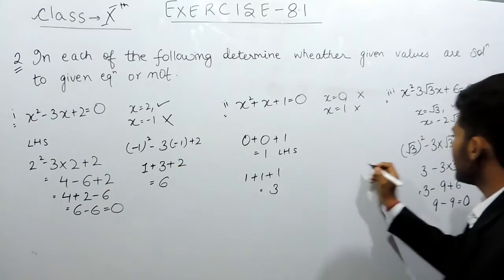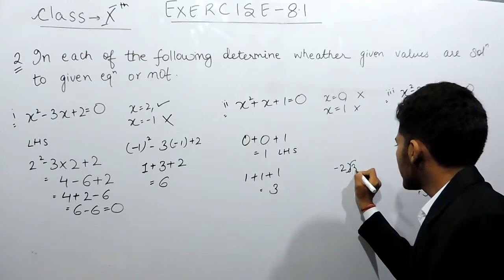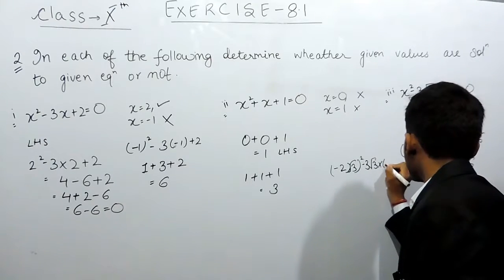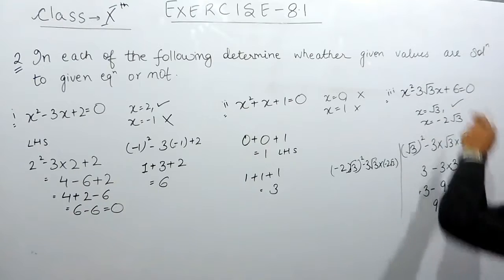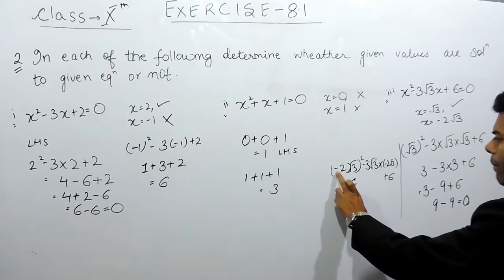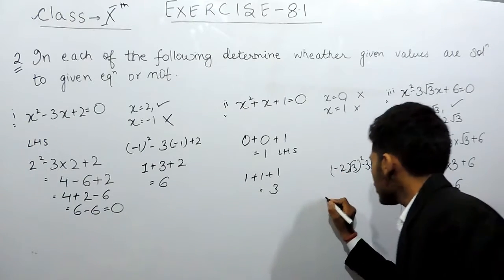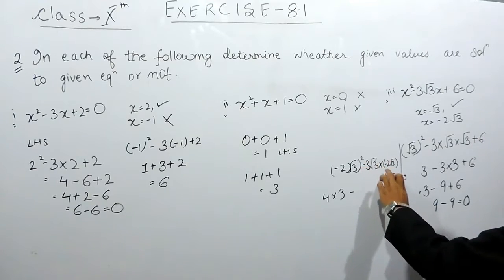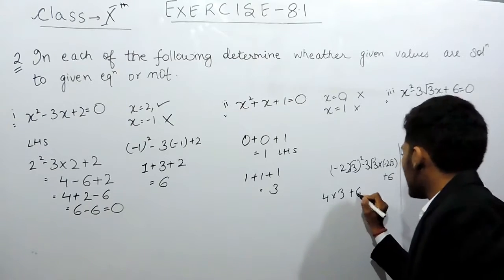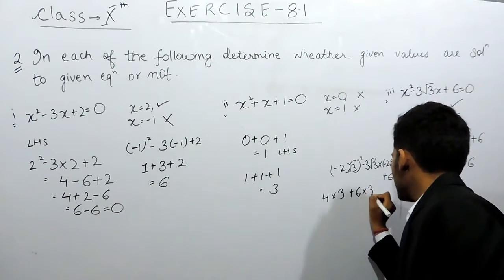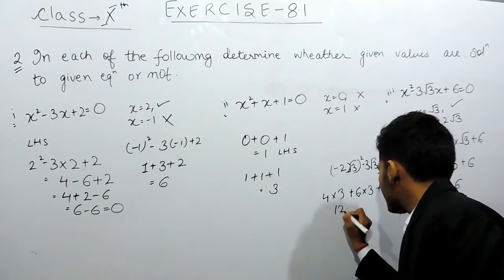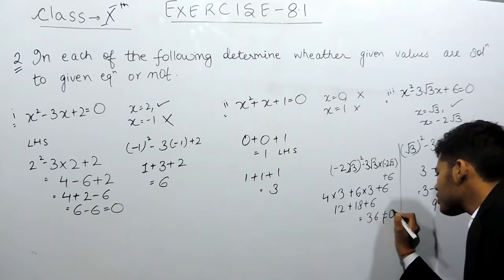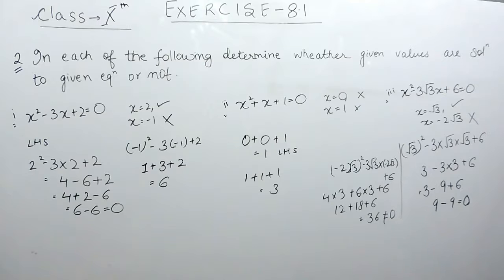Now on keeping x equals to minus 2 root 3, this will be minus 2 root 3 whole squared minus 2 root 3 plus 6. On squaring, minus becomes positive: 2 squared is 4, and root 3 squared is 3, so 4 into 3 equals 12. Minus and minus on multiplication gives us plus: 2 times 3 is 6, and root 3 multiplied by root 3 is 3, giving plus 18, plus 6. That equals 12 plus 18 plus 6 equals 36, which is not equal to 0. So minus 2 root 3 is not a root of this given quadratic equation.